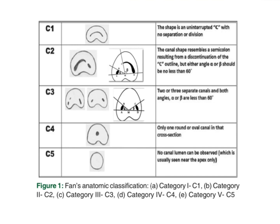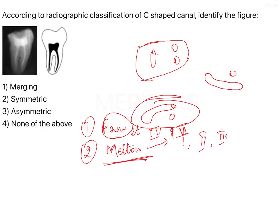This is another classification where Fan gave three — actually five — different types of C-shaped canals in cross-section. In C1, the distal merges completely with the mesiobuccal. In C2, the distal forces its way towards the mesiobuccal but does not completely fuse. In type 3, you have three separate canals from distal to mesiobuccal. In type 4, you have one single canal from the furcation all the way to the apex. In type 5, no canal lumen can be observed except near the apex — the rest is filled with dentin.